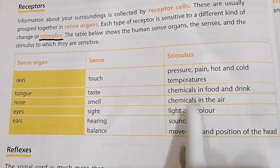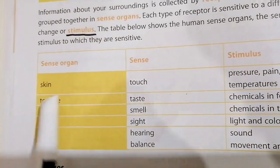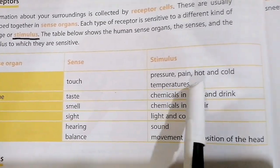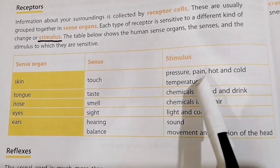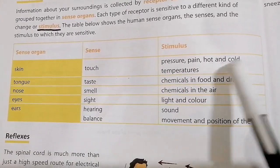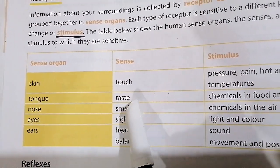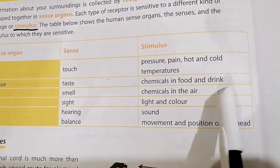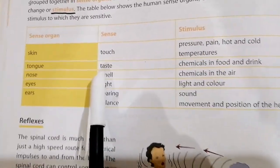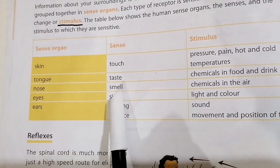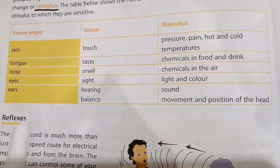The skin senses touch — pressure, pain, and hot and cold temperature. When we touch something, we can feel the pain and whether it's hot or cold. The tongue gives us taste, sensing chemicals in food and drink — whether something is sweet or bitter. The nose senses smell — chemical particles present in the air.